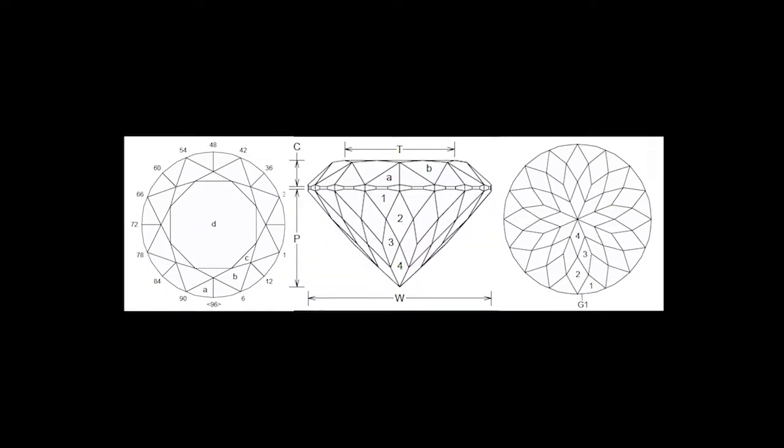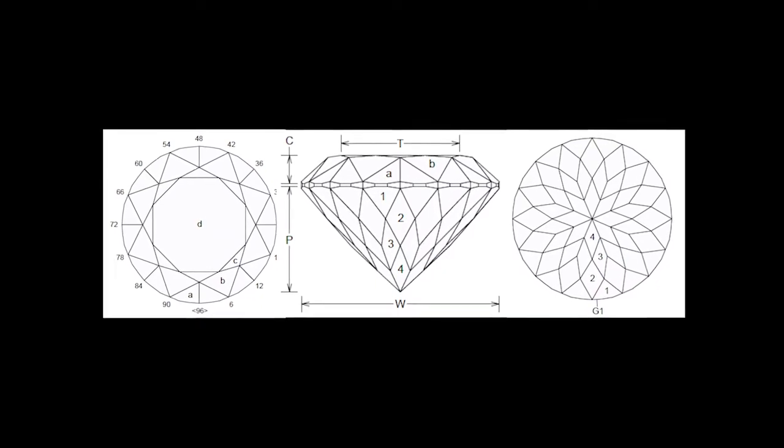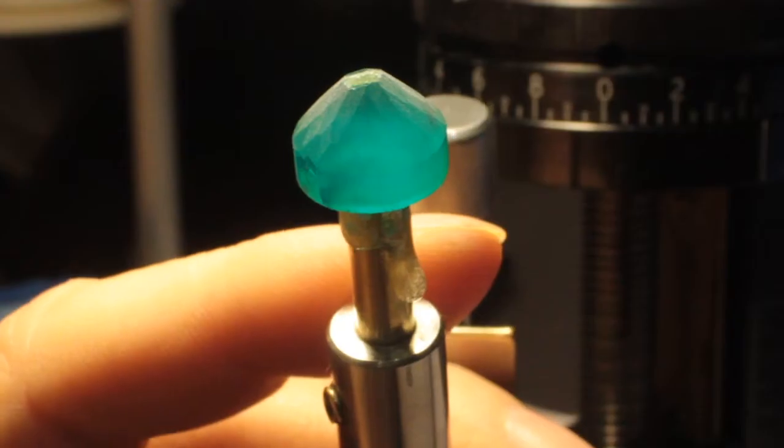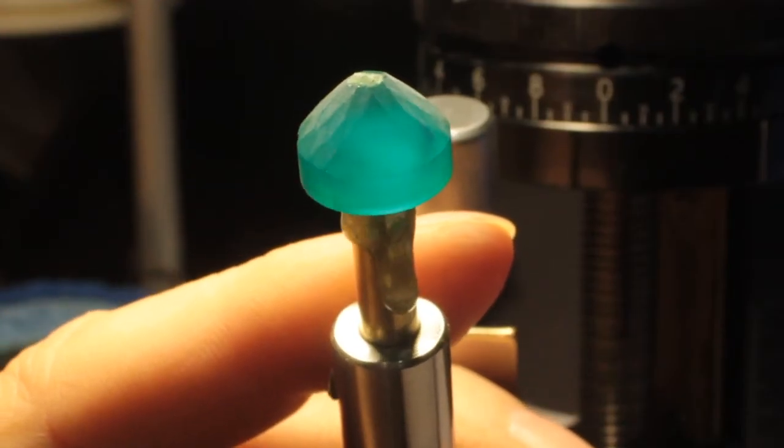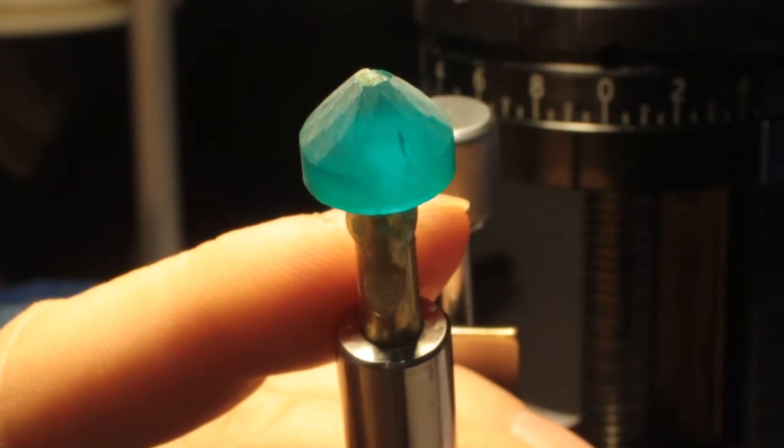So if I cut these emeralds correctly, they should look like this from the top, side, and bottom when I am finished. I finished pre-forming the larger piece of our lab-created emerald with a 320 topper.